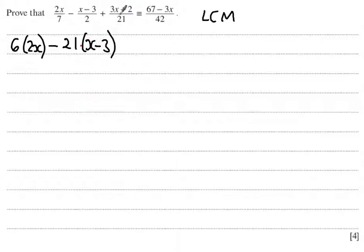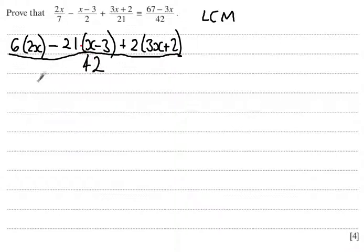And my third fraction, to get this over 42, I'd have to multiply top and bottom by 2, so plus 2 lots of 3x plus 2. This is all over the common denominator of 42.